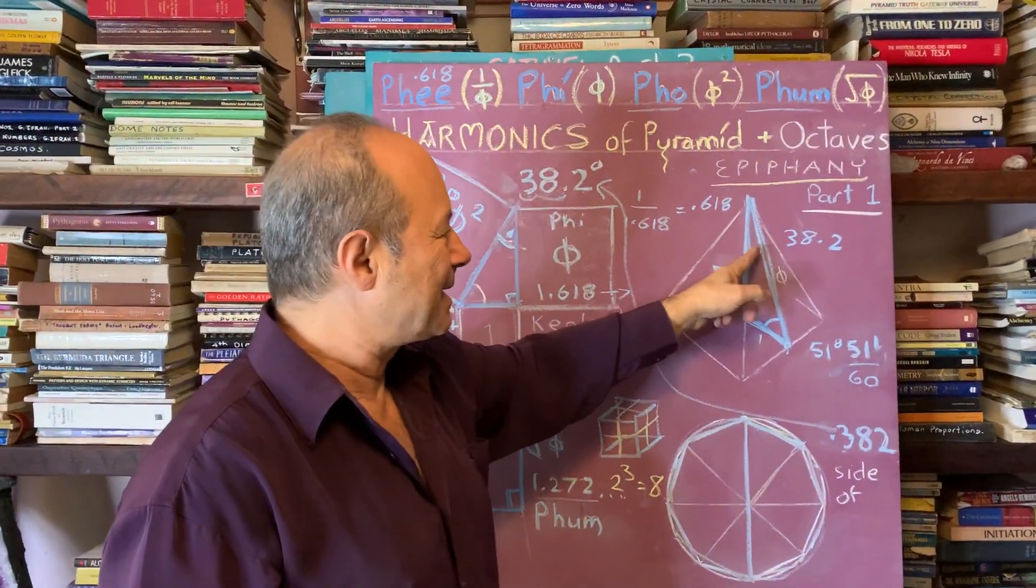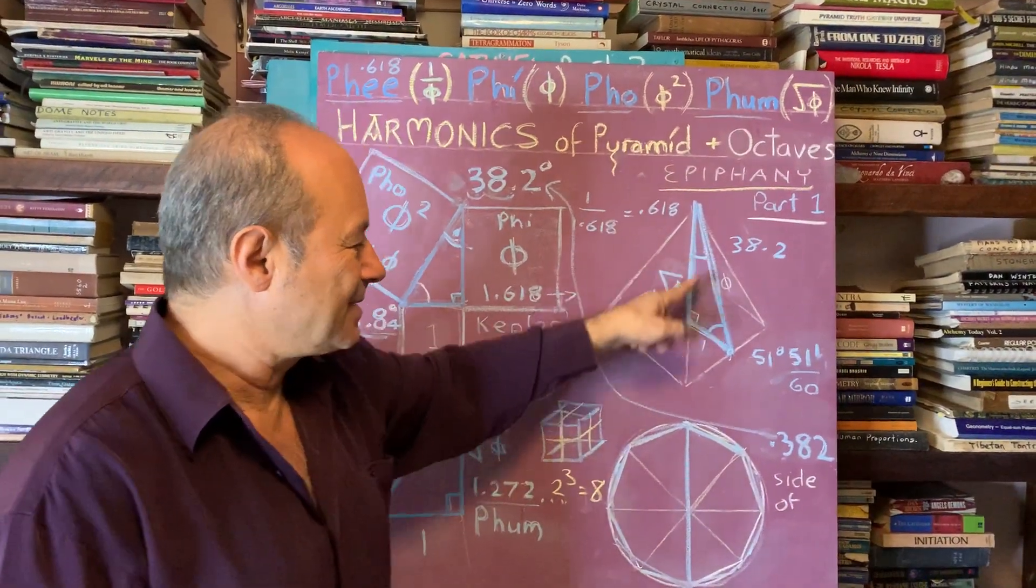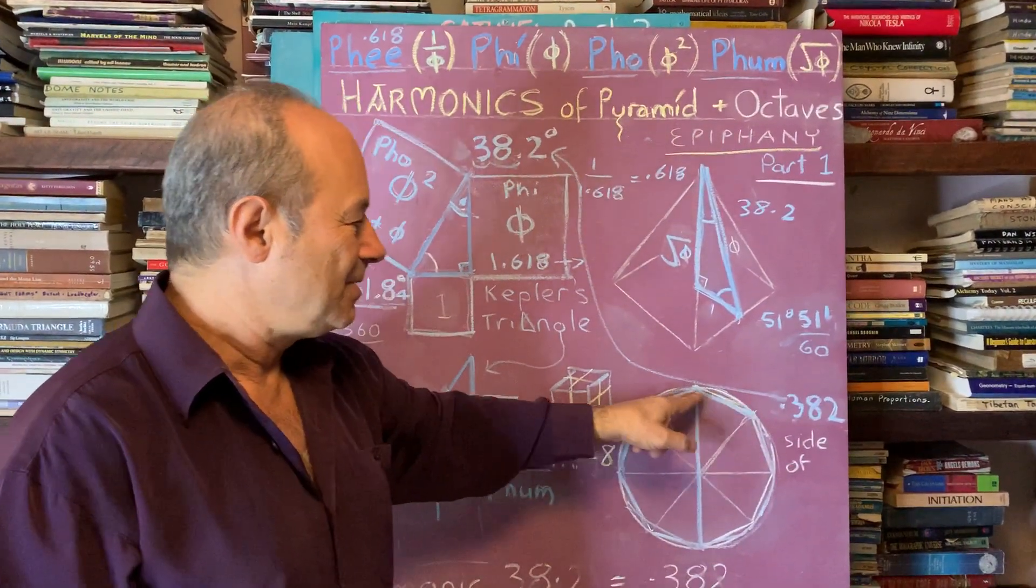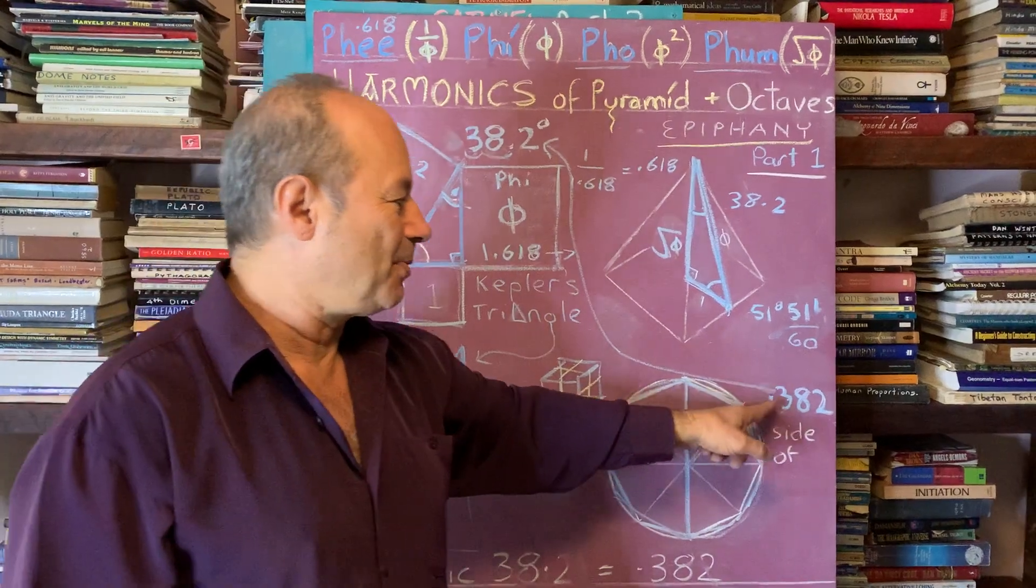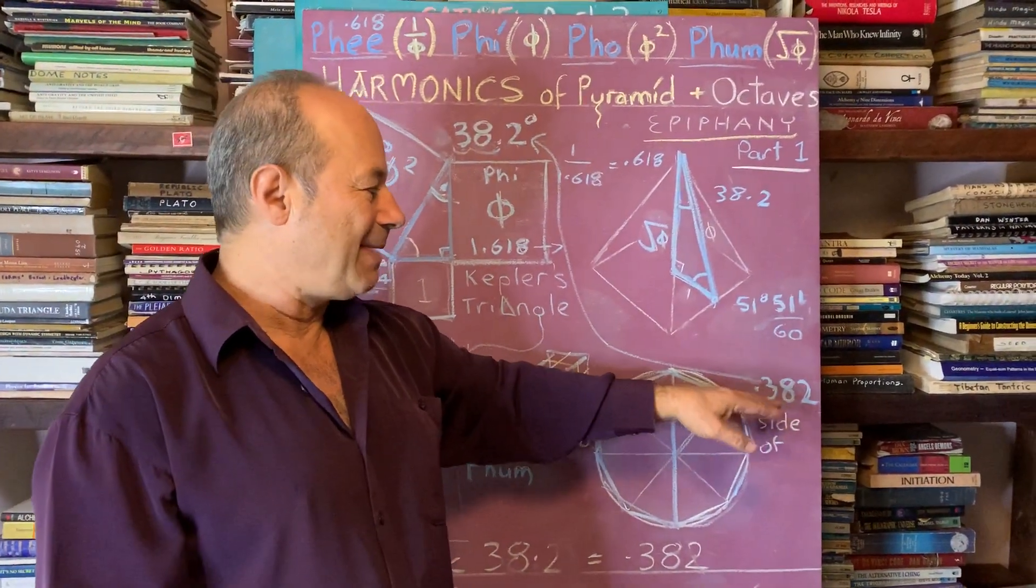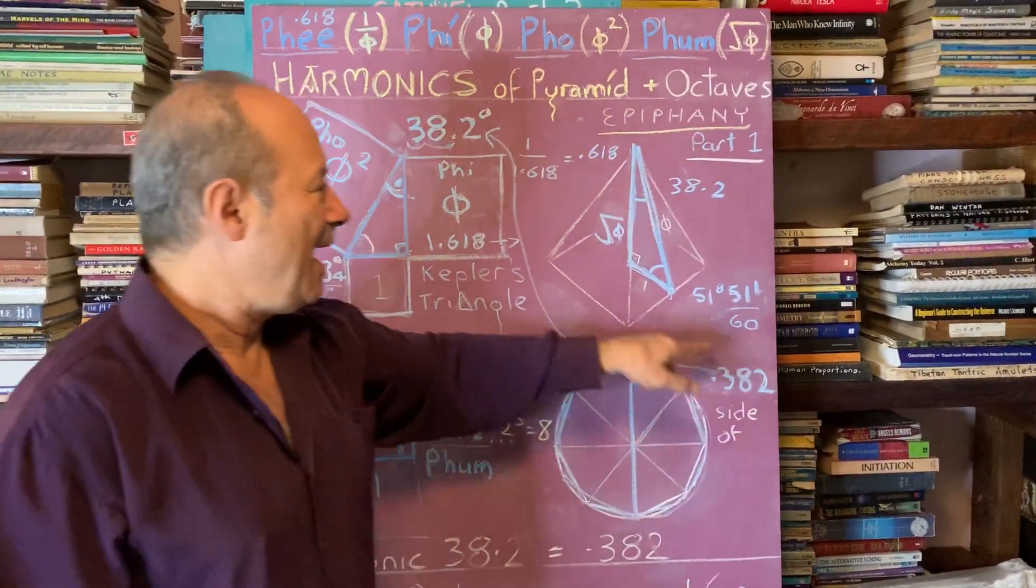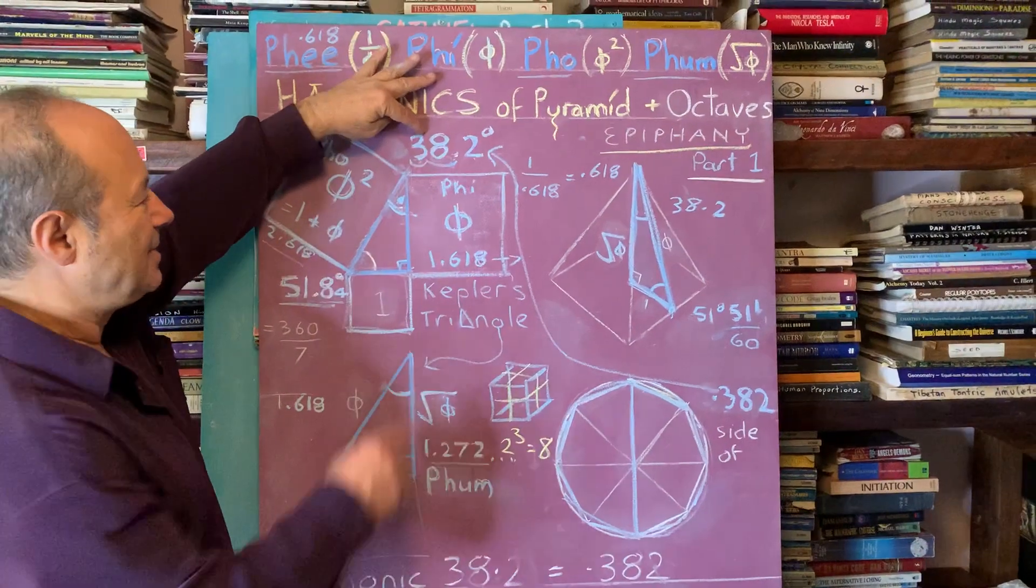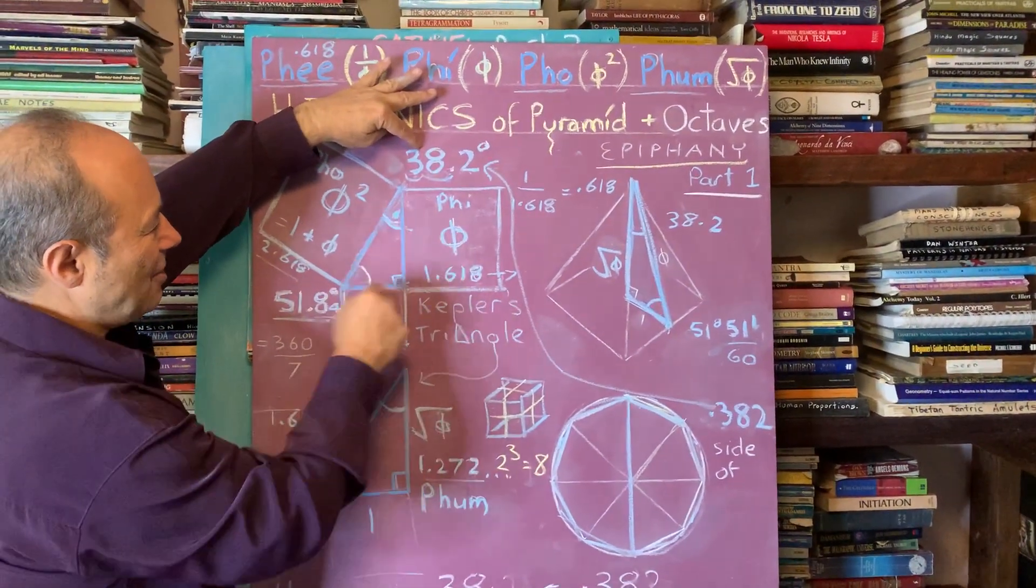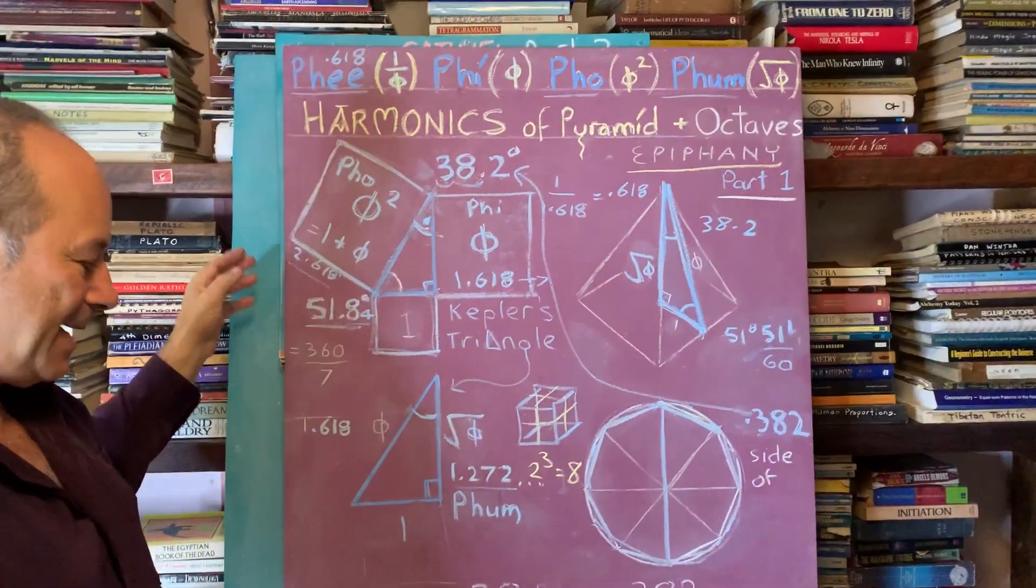We just showed how the apex angle of the pyramid, 38.2 degrees, has a direct harmonic link to the side of an octagon, which is 0.382. In part two, I want to explain a bit about harmonic maths: how can a decimal 0.382 have a harmonic relationship to the angle in the capstone triangle of 38.2 degrees?